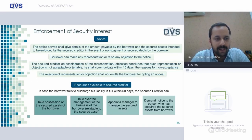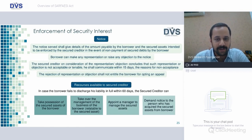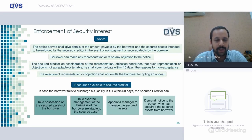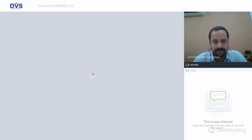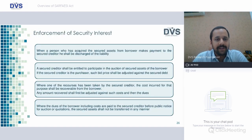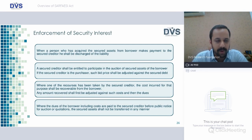Recourse available for secured creditor in case the borrower fails to discharge his liability in full within 60 days: one, secured creditor can take possession of a secured asset of a borrower; two, take over management of the business of the borrower related to secured asset; three, appoint a manager to manage the secured assets; four, demand notice to the person who has acquired the secured asset from the borrower. When a person who has acquired the secured asset makes payment to the secured creditor, he shall be discharged of the liability. The cost incurred for the purpose of enforcement shall be recovered from the borrower.